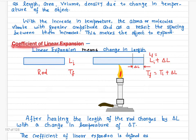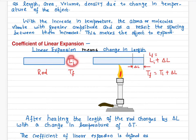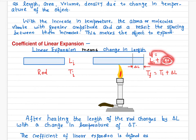Let's talk about the coefficient of linear expansion. Say we have a rod with an initial length Li at initial temperature Ti. After heating, the length changes to a final length Lf, which is the initial length plus some increment in length, and the final temperature is Tf.